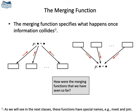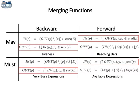As a final remark, notice that the equations that join information are called merging functions. The merging functions are special operators that determine how data is combined at join points. Do you remember how were the merging operators that we had seen in the previous classes? Well, we have used two kinds of merging operators: union for the may analysis and intersection for the must analysis.